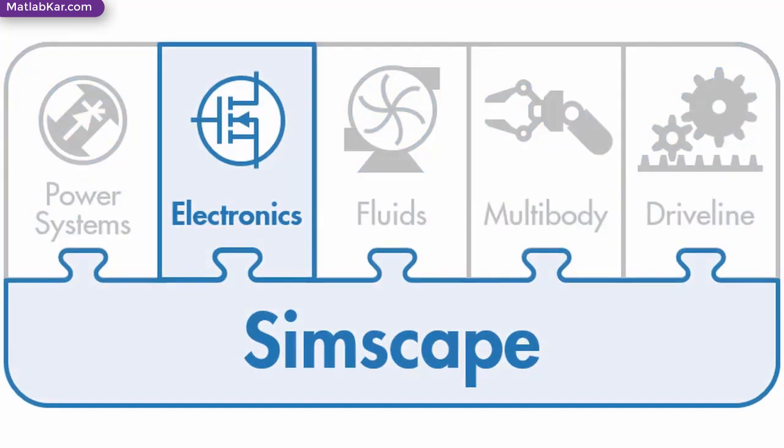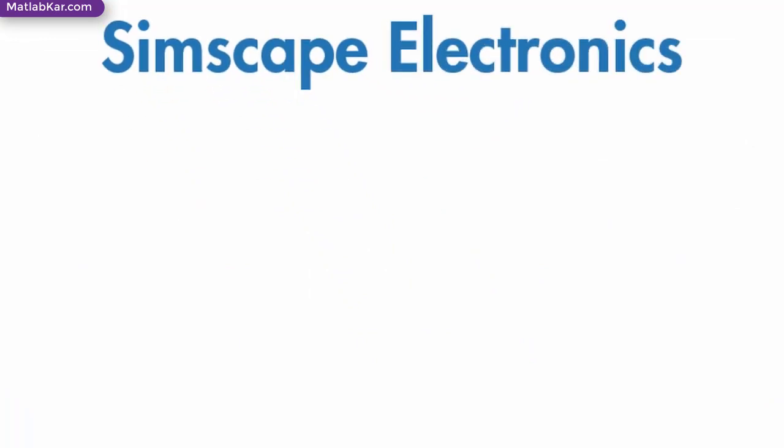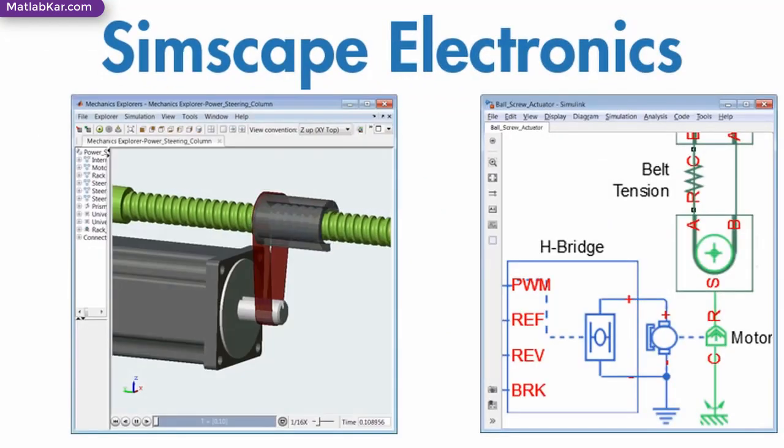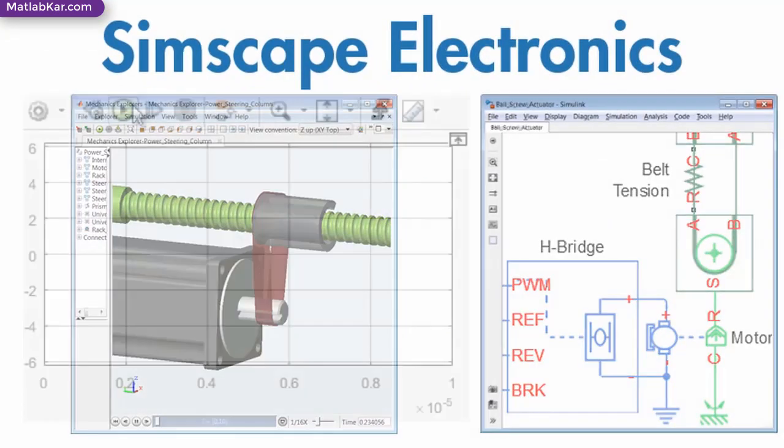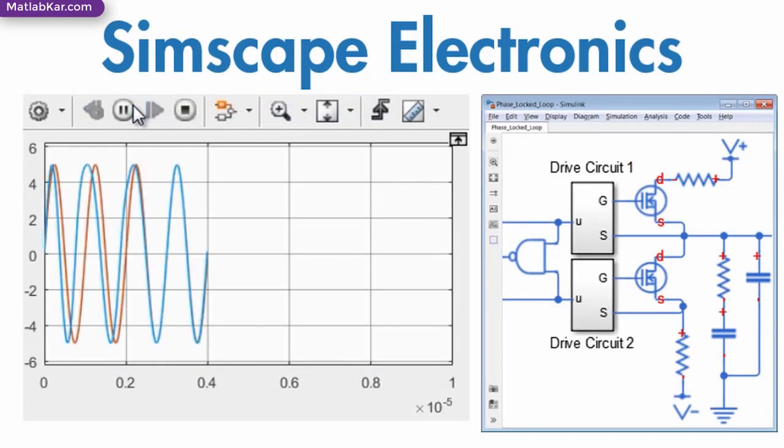SimScape Electronics provides component libraries for modeling and simulating electronic and mechatronic systems. You can use these components to develop electromechanical actuators and evaluate analog circuit architectures.